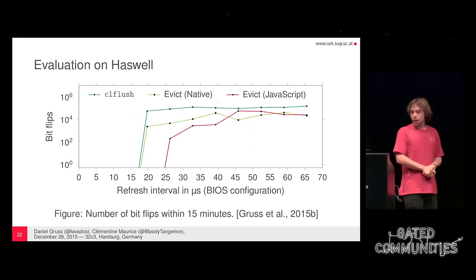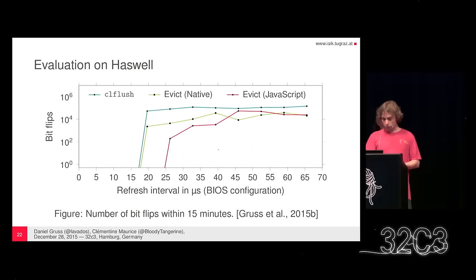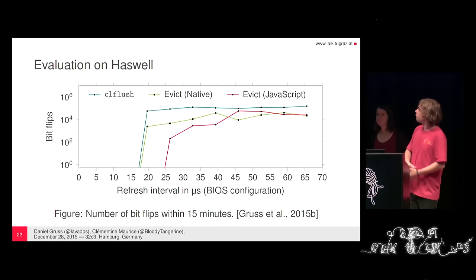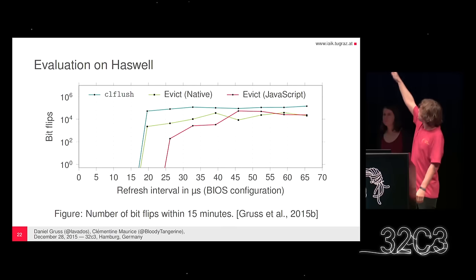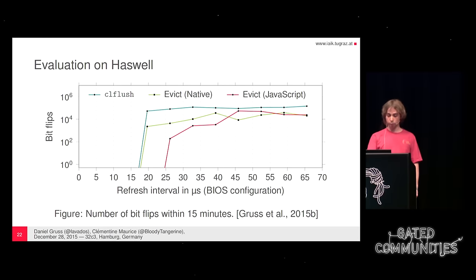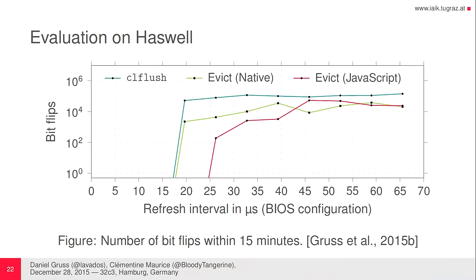We evaluated the bit flip rate on our Haswell test machine and varied the refresh interval in the BIOS — the default is very low and 75-something is the maximum we could set. There is a threshold where bit flips start to occur, and for CLflush and native code eviction it's approximately the same. We get slightly fewer bit flips with eviction than with CLflush. For JavaScript, a slightly higher refresh interval is needed because JavaScript is somewhat slower than our optimized native code. In the higher refresh interval cases, for eviction, CLflush, and even JavaScript, we get more than 10,000 bit flips in 15 minutes — that's more than 10 bit flips per second.